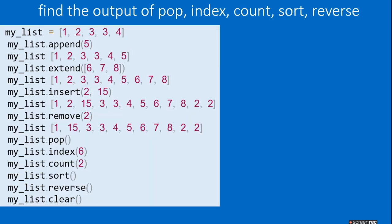Next question: find the output of pop, index, count, sort, and reverse. The list starts as [1, 2, 3, 3, 4]. Append 5 → [1,2,3,3,4,5]. Extend with [6,7,8] → [1,2,3,3,4,5,6,7,8]. Insert at position 2 the value 15, making the list [1,2,15,3,3,4,5,6,7,8,2,2].